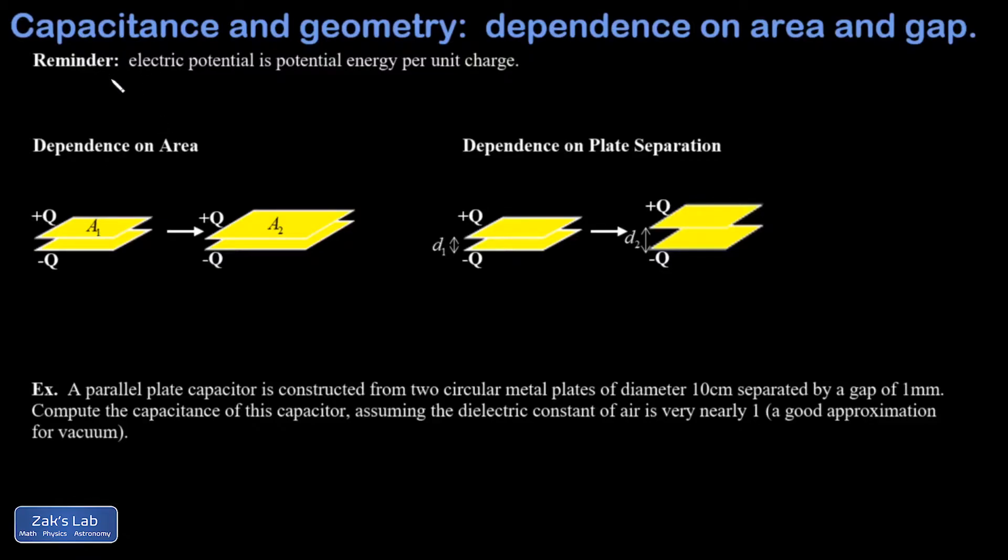I'm going to start with a little reminder here. Electric potential is potential energy per unit charge, so in other words V is PE over Q, and there are two different sources of potential energy for the charges on these capacitors.